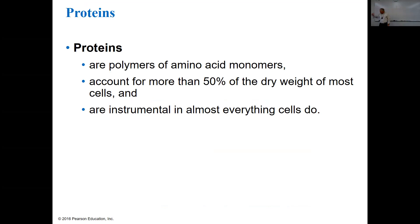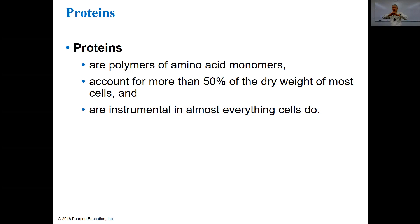Now let's talk about proteins — polymers of amino acids. Proteins account for more than 50% of the dry mass of cells and are instrumental in almost everything cells do. Some are structural proteins, some are receptors, some are enzymes. They're the most complicated of the macromolecules because they have 20 different monomers.